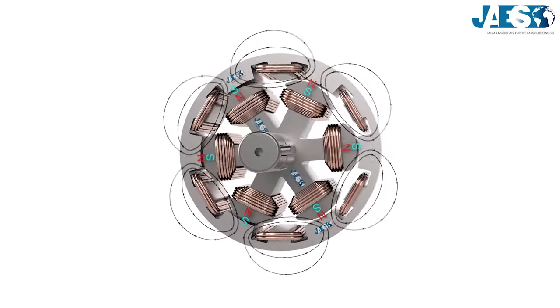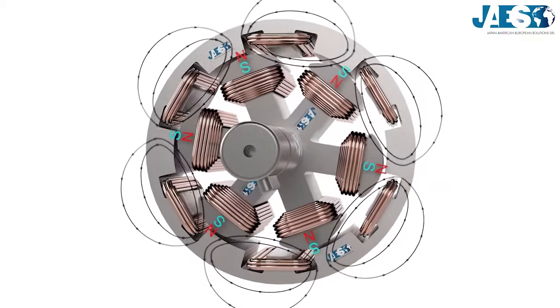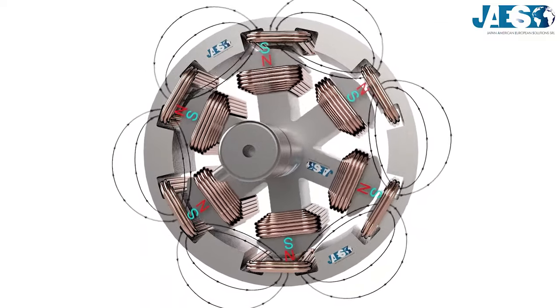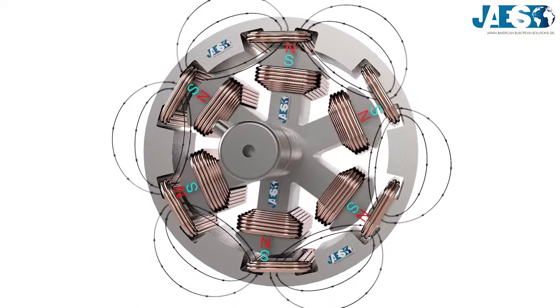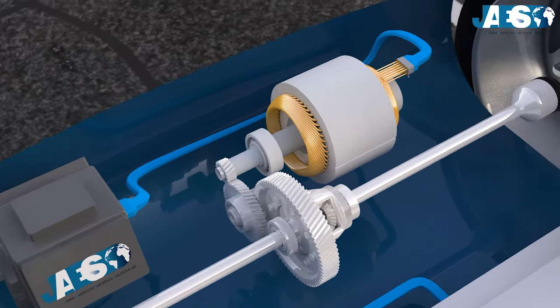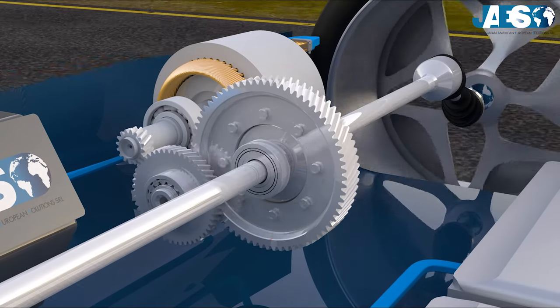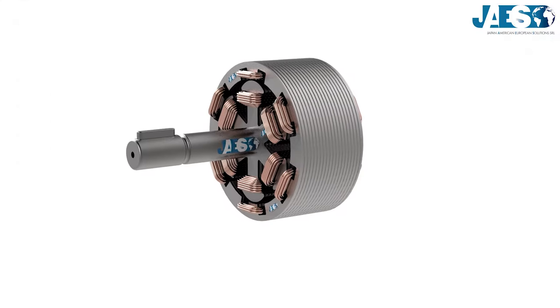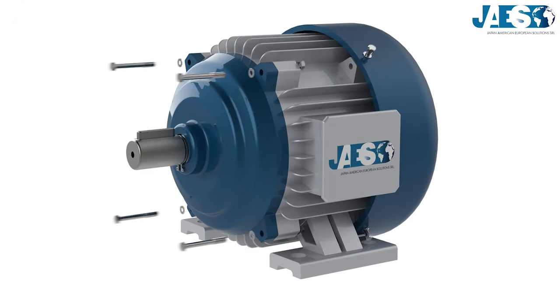The synchronous motor is an electric motor whose rotation speed is synchronized with the electric frequency of the alternating current, and it is used in different fields where high precision is necessary. In this video, we will explain how this type of motor works.